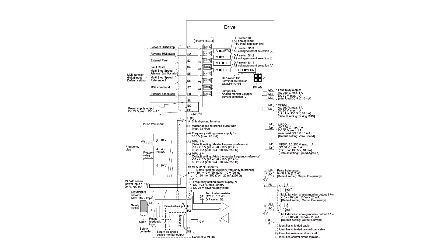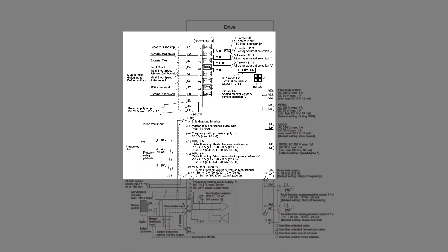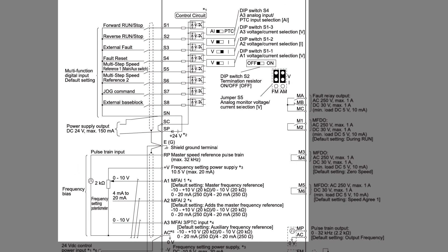Next is the control circuit wiring diagram for the GA-800. We will focus on this section. S1 through S8 create switched connections for various functions such as start, stop, and fault reset. Terminals +V, A1, A2, A3, and AC are for frequency reference inputs.